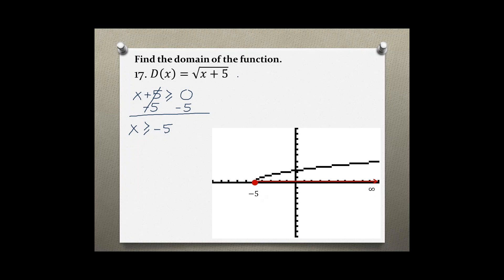Writing this in set builder notation: {x | x ≥ -5}.